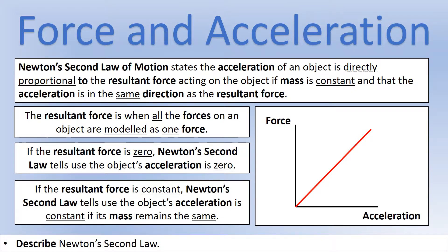If the resultant force is zero, the law tells us the acceleration has to be zero — which makes sense with Newton's first law, because if force is zero the speed and direction have to stay the same, meaning acceleration is zero. If there's a constant resultant force, the acceleration will also be constant as long as mass stays the same. A graph of resultant force against acceleration, with constant mass, gives a straight line through the origin — a directly proportional relationship.